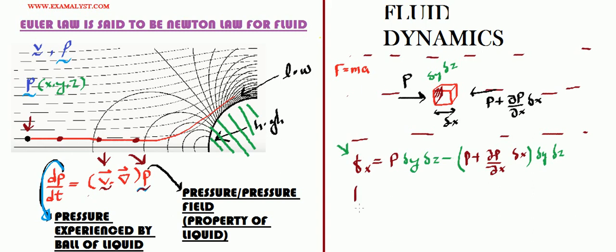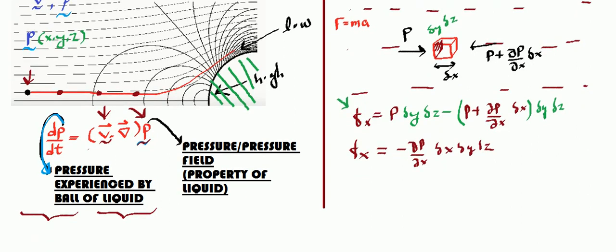If you solve it, you will find that Fx equals minus (dP/dx) times delta x delta y delta z. This is the pressure force experienced by this cube of liquid in the x direction. This is for the 1D case.